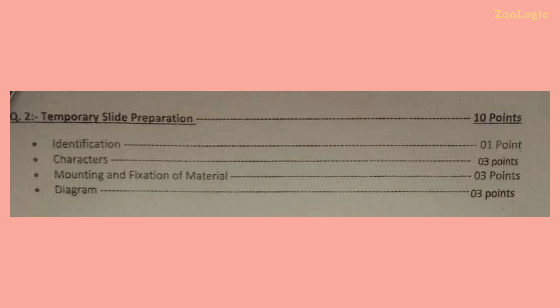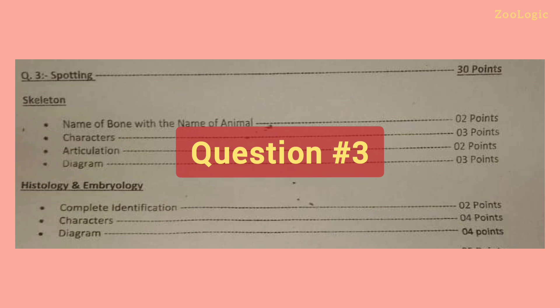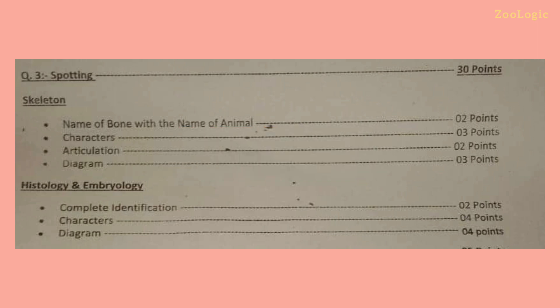Question number three is spotting, comprising thirty points — three marks. There are three spots altogether: two from the skeleton and one from histology or embryology, where a slide is given. For skeleton spots, you have to write down the name of the bone along with the name of the animal — for example, 'Spot number one is identified as pterygoid of frog' or 'atlas vertebra of frog' or 'sphenethmoid of frog.'